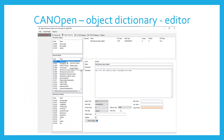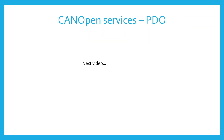As you can see here in the open source EDS editor, some objects are mandatory and others are optional. This configuration file is also known as an electronic data sheet, so it has an EDS extension. The configuration editor can generate C source and header files which are part of a CanOpen stack. Now I will move to the PDO services in the next video.